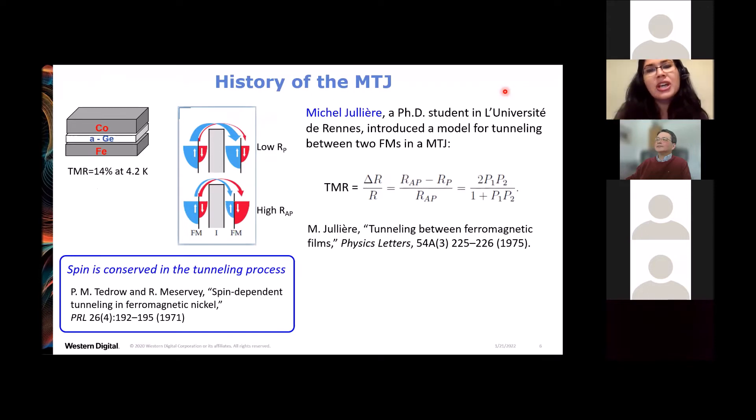So I want to introduce the MTJ. It is the basic unit for storing a bit in MRAM, and it was introduced by Michael Jullier. While he was a PhD student, he introduced a model for tunneling between two ferromagnets separated by an insulating tunnel barrier. When you pass a current, you are in a low resistance state when the two ferromagnets' magnetizations are oriented parallel to each other. You're in a high resistance state when the magnetizations are oriented anti-parallel to each other. And this only works because spin is conserved in the tunneling process. This is something that we take for granted now, but it was shown experimentally in a really nice set of experiments just a few years prior and it inspired the work of Jullier.